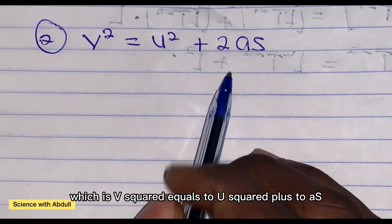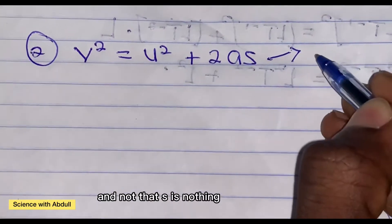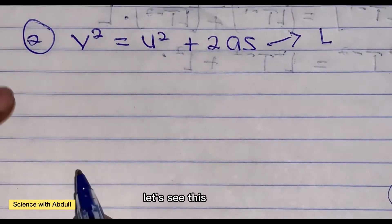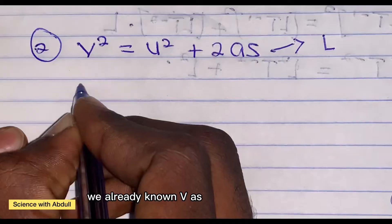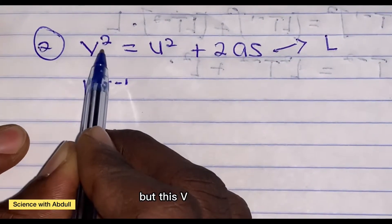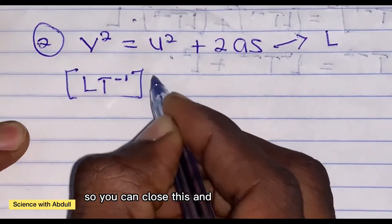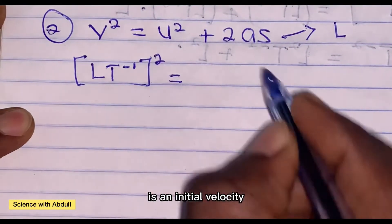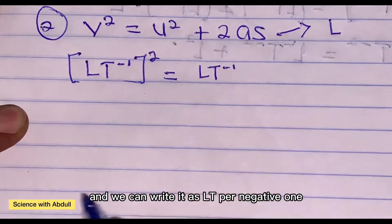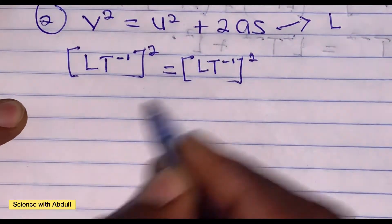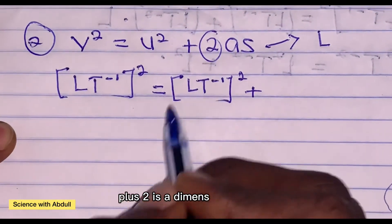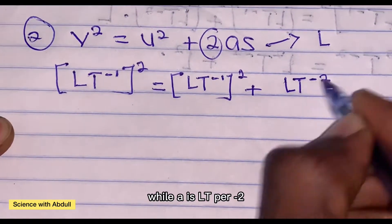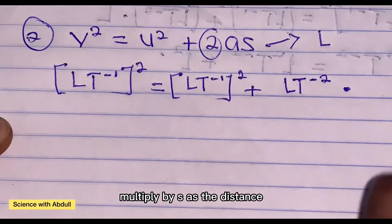The second formula is v squared equals u squared plus 2 A s, where s is a distance denoted as capital L. We already know v as L T to the power of negative 1, but here v is squared, so we write it as L T to the power of negative 1, all squared. Similarly u squared is L T to the power of negative 1 all squared, plus 2 — which is dimensionless and we neglect it — while A is L T to the power of negative 2, multiplied by s which is L.